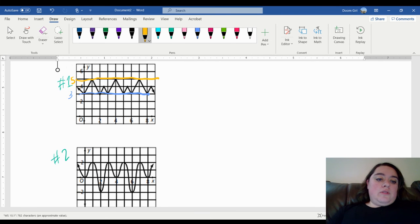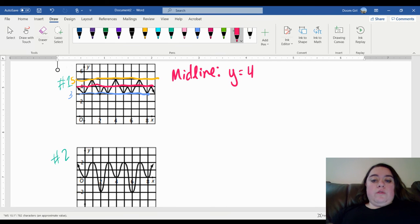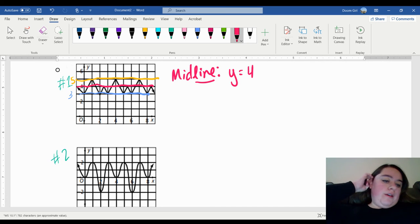So the absolute halfway point would have to be four throughout the entire graph. So the midline is going to be y equals four. Now, the reason why I'm saying that it's y equals four is because it is a horizontal line, and it is a line. So we must have either an x or a y equals in front of the value.